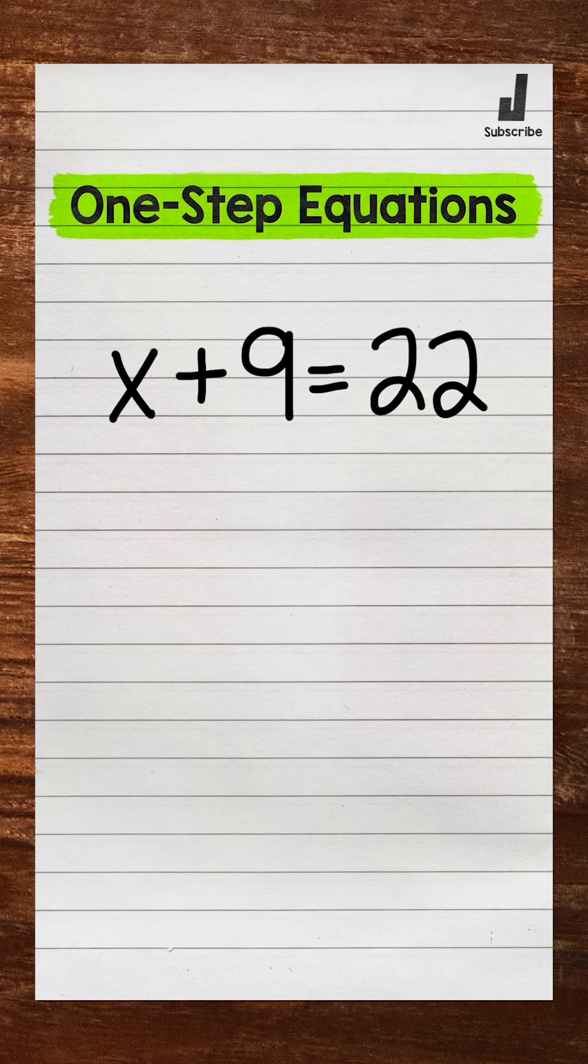This is Math with Mr. J. Let's take a look at how to solve one-step equations. We have x plus 9 equals 22. We need to isolate the variable, so get it by itself.